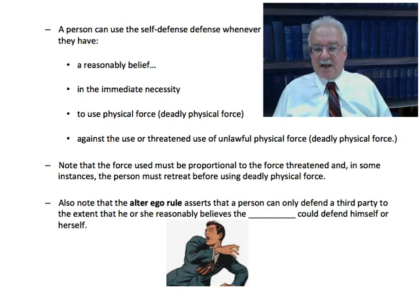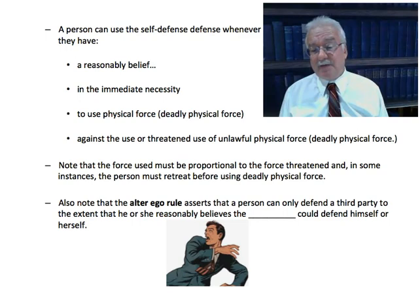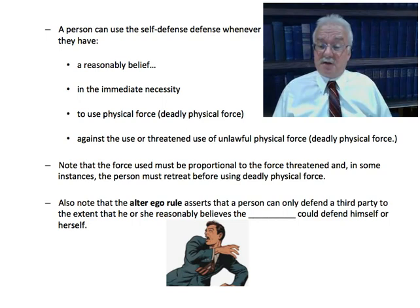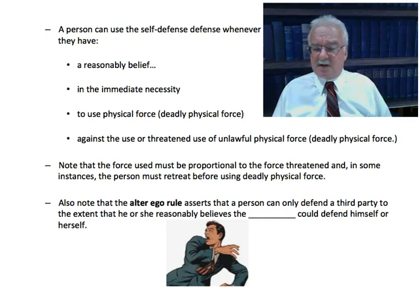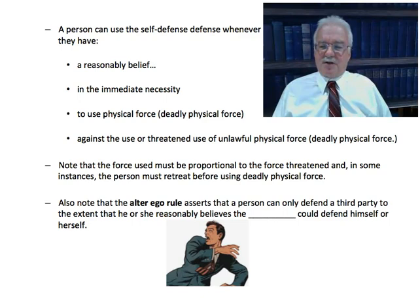We already went over the alter ego rule. If you intervene using physical or deadly force to defend somebody else, you have to believe that person would be justified in using that force to defend themselves. That's not always easy if you stumble on a situation without knowing all the facts. For example, you turn a corner, see someone on top of another person striking them, and the person on the ground is saying 'help me.' You intervene, only to discover the person on top is a police officer making a lawful arrest — and now you're also under arrest. Third-party cases can be perilous and confusing.